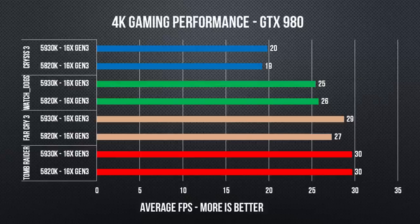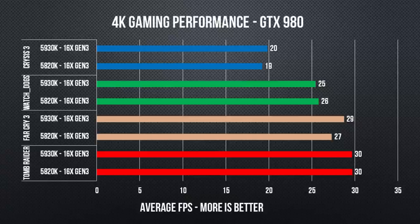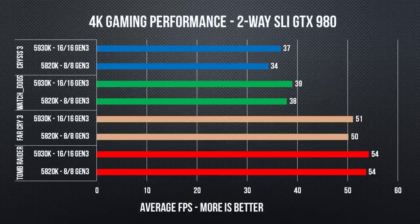Fraps was used to take average frame rates for each of our standard test runs, and all games were run at 4K on pretty demanding settings to ensure we were pushing the hardware as hard as possible. As expected, a single graphics card config is not affected in any way since it's running in 16x mode on either CPU. But dual cards will be running at 8x/8x on a 5820k and 16x/16x — an effective doubling — on a 5930k. And as counterintuitive as it might be, they both ran the same.